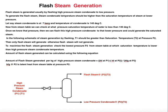Looking at this schematic of flash steam generation: high pressure steam condensate passes through a control valve where pressure is dropped to a lower pressure. The condensate gets flashed in a flashing vessel — steam is separated and comes out from the top of the vessel, while low pressure condensate comes out from the bottom of the flashing vessel.